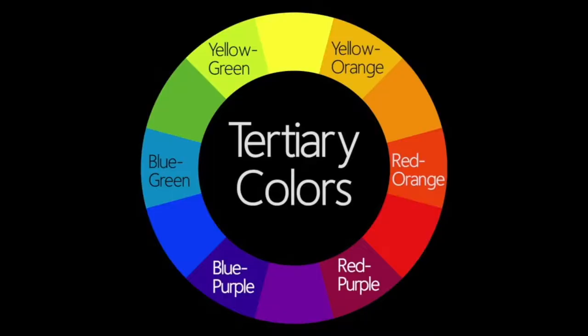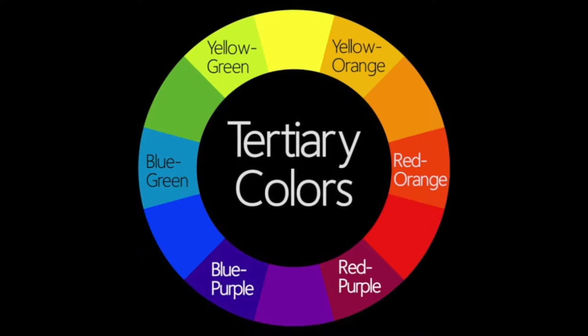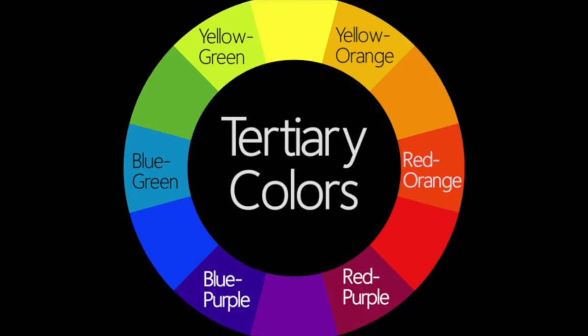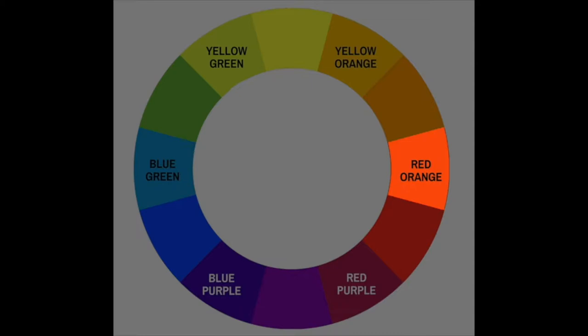The next group of colors is called tertiary colors. There are six tertiary colors. These colors are made by mixing secondary colors. The tertiary colors are red-orange, yellow-orange, yellow-green, blue-green, blue-purple, and red-purple.